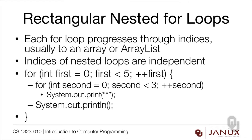We start with first equals zero and immediately dive into the inner loop, which repeats three times and prints three asterisks. So the inner loop prints a line of three asterisks, and the outer loop repeats five times. What you'll have is five lines of three asterisks each — that's what I mean by rectangular. The outer loop repeating five times didn't interact with the inner loop repeating three times; it just controlled the number of lines. That's what I mean by independent.